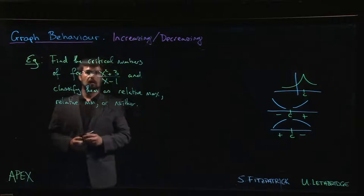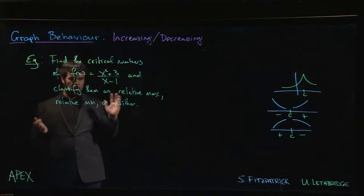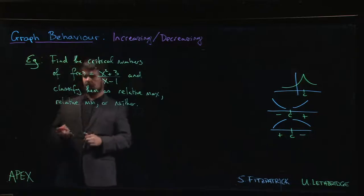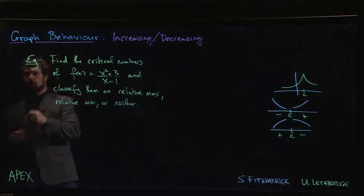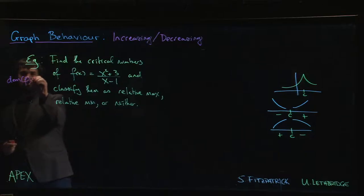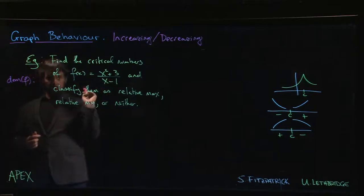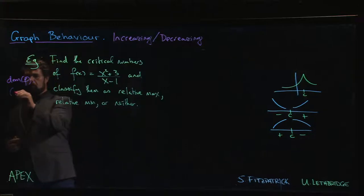Let's take a look at an example. We're given a function, we want to find and classify these critical points. First thing we might notice is that the domain, well it's a rational function so it's defined everywhere the denominator is non-zero, so it's defined from minus infinity to 1 and from 1 to infinity.